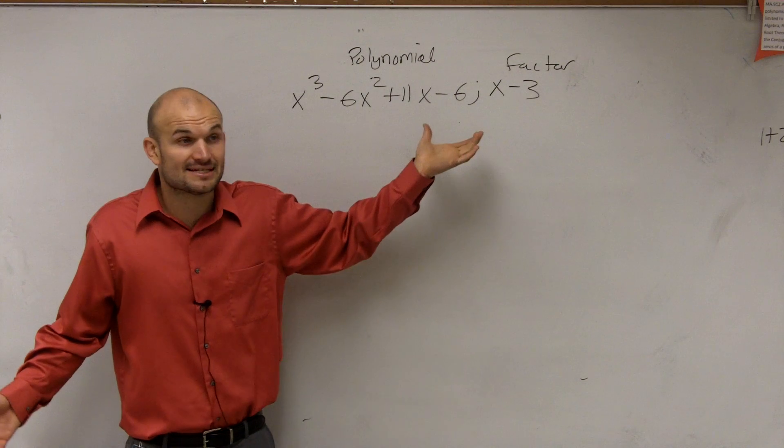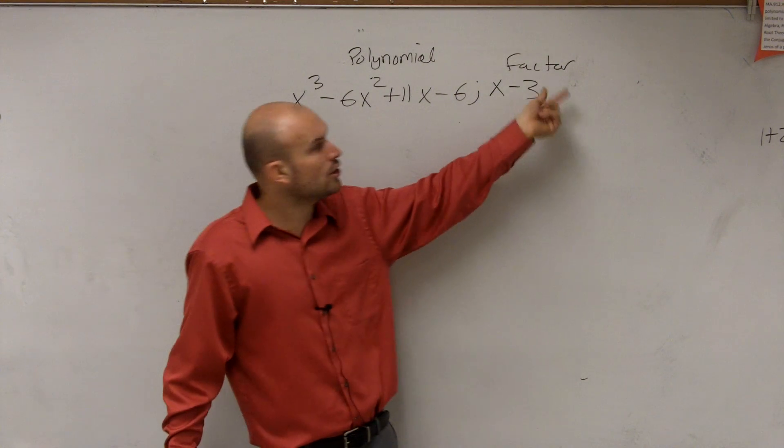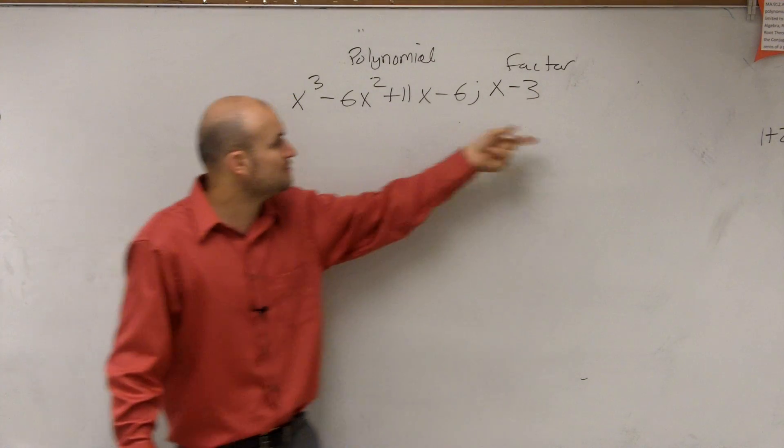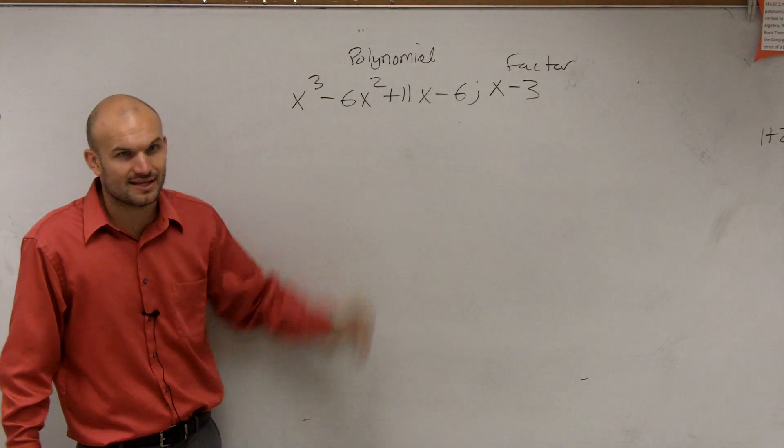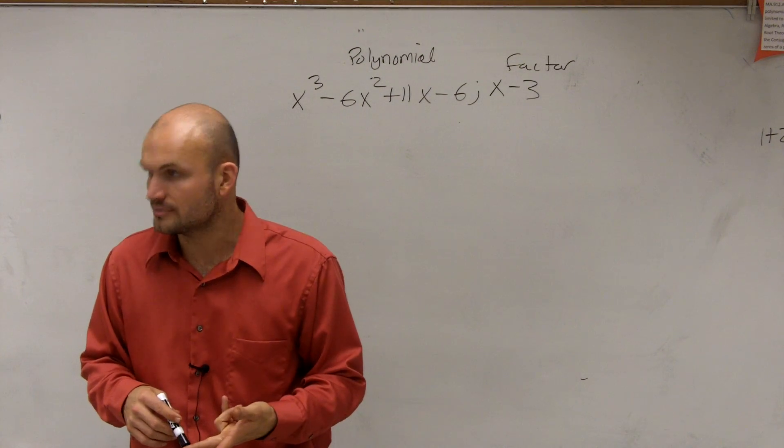We might not know right now how many times it does. It's not as easy as 6 and 2 and 12, but we now know since I say in the problem this is a factor, then you know it divides into this. So there's two different ways we can divide: long division or synthetic division.